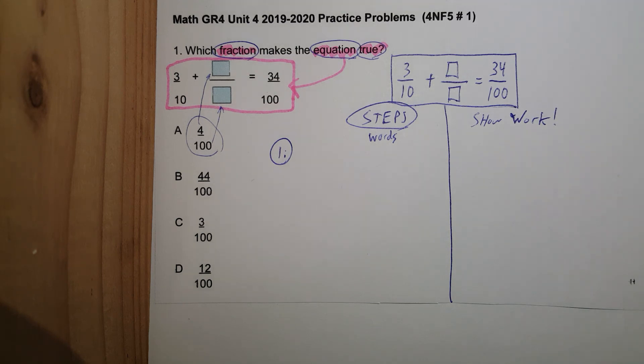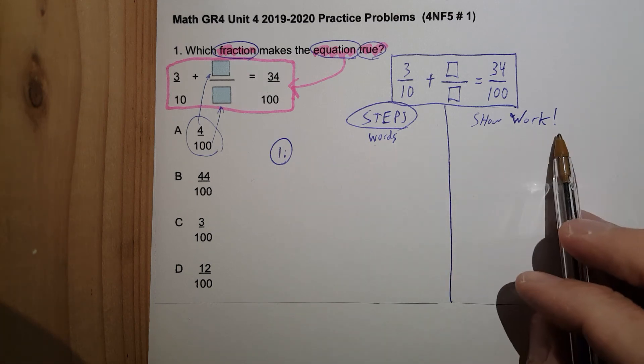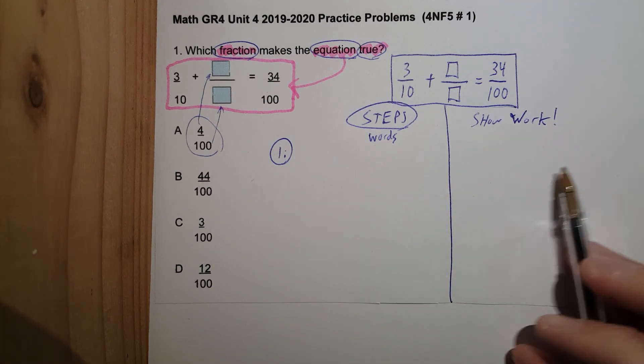All right, I started this with the kiddos. So every math problem, there's steps. Step one, two, three, four, five. And we're going to go with this approach. Okay, steps on the left. We will write it in words. Show the work on the right. Let's make this happen.